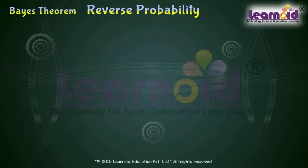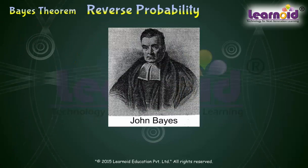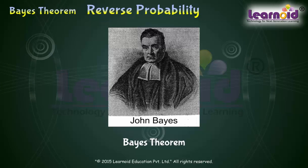Famous mathematician John Bayes solved the problem of finding reverse probability by using conditional probability. The formula developed by him is known as Bayes Theorem.